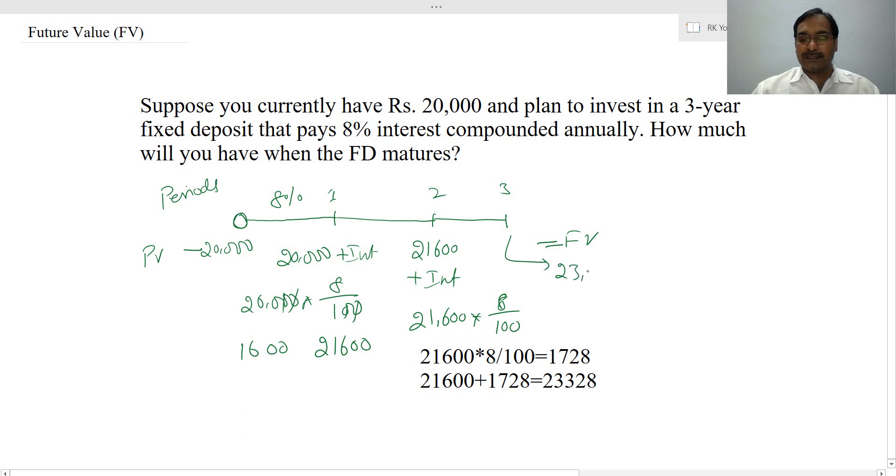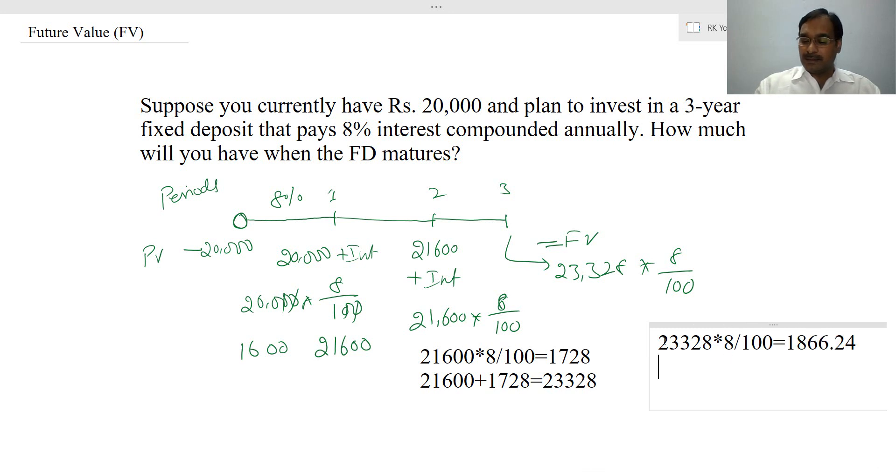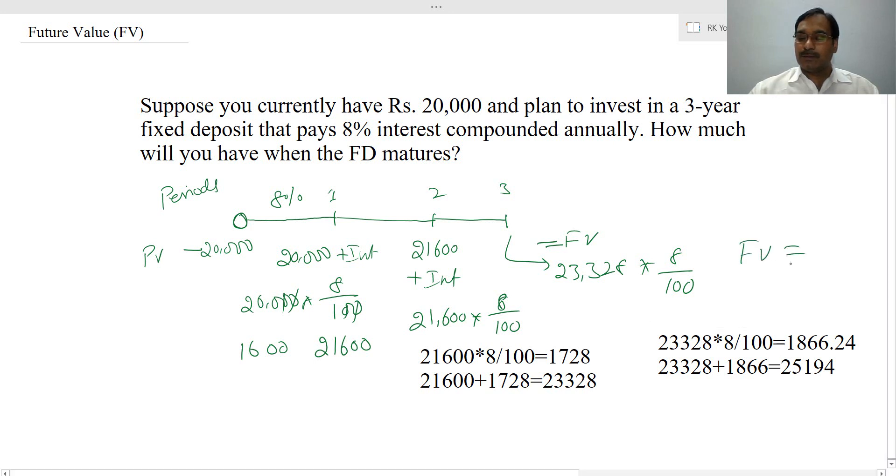Beginning of the third year, this is 23,328 and interest on this. So 23,328 into 8 divided by 100, this is 1,866. So 23,328, that is the amount at the beginning of the third year, plus 1,866, that is the interest earned during the third year. So this is 25,194, that means your future value equals 25,194.